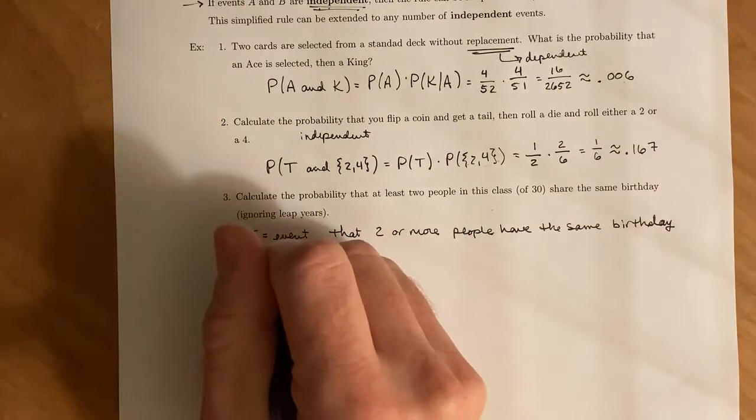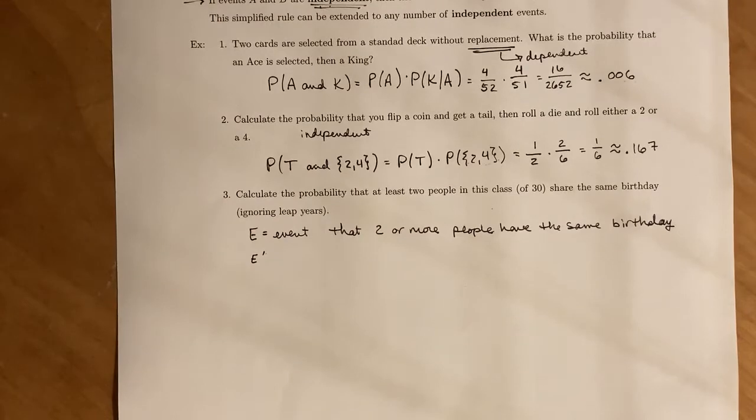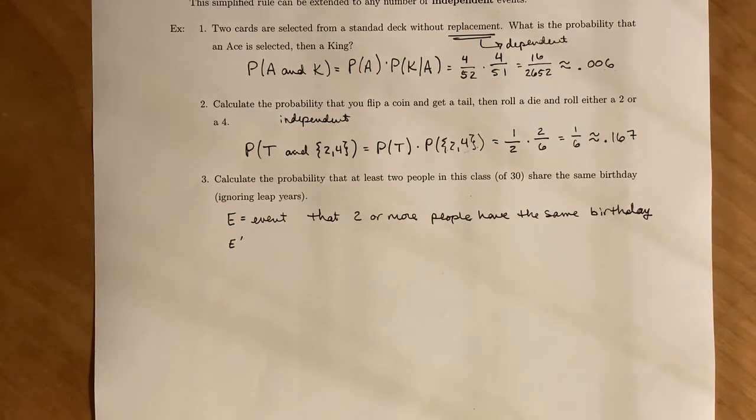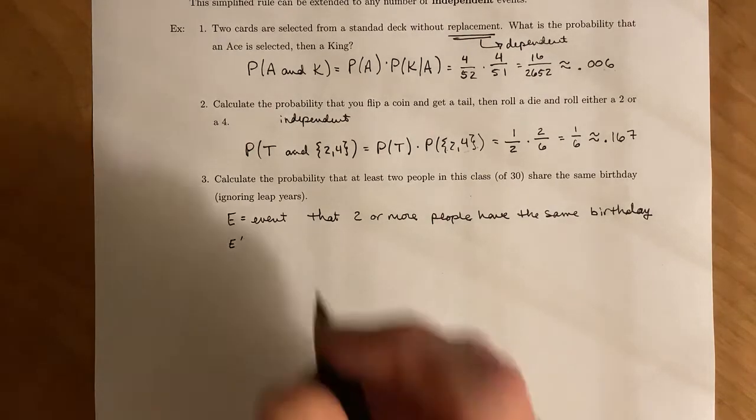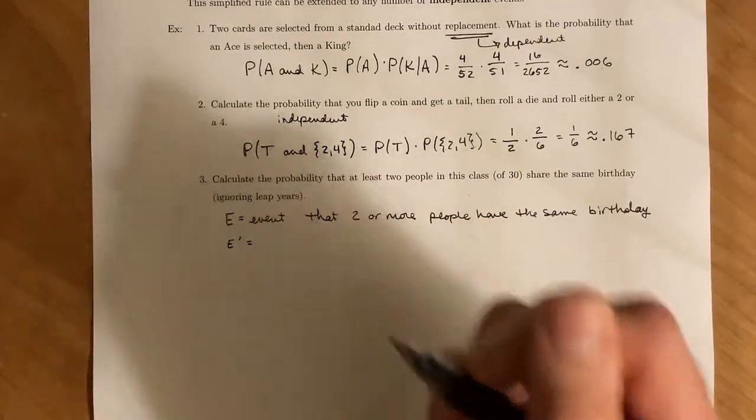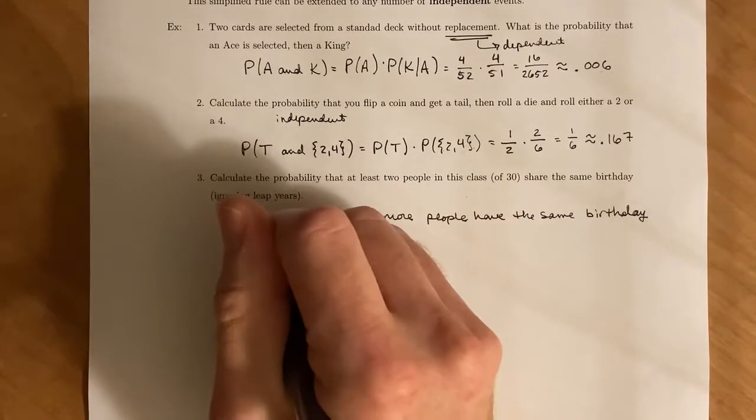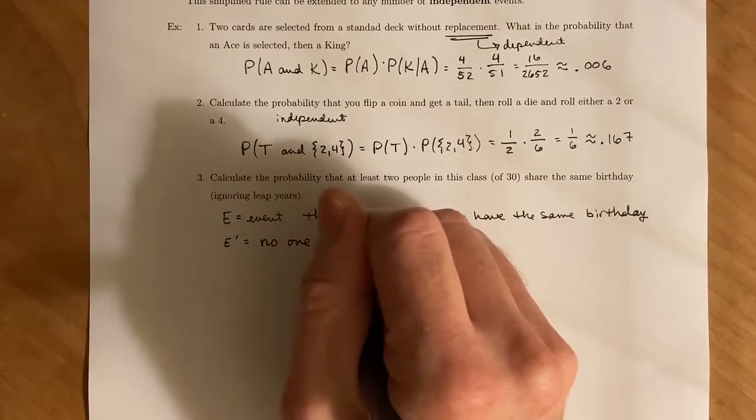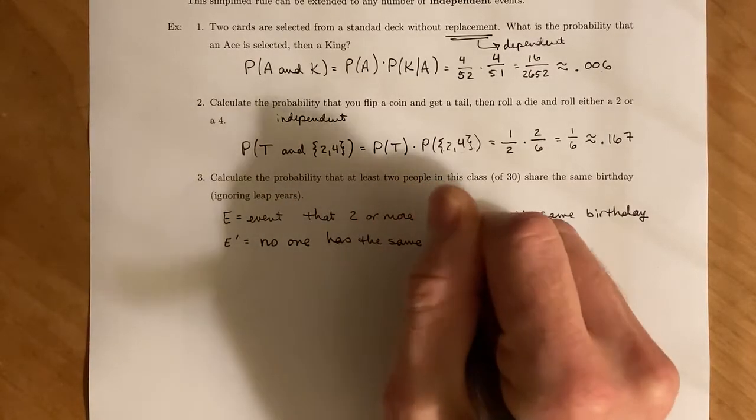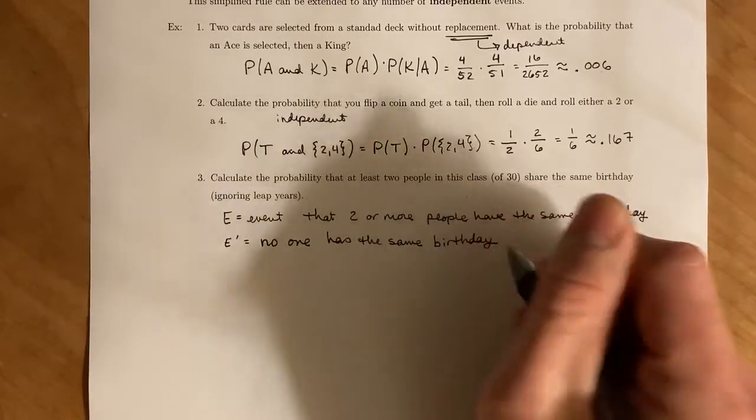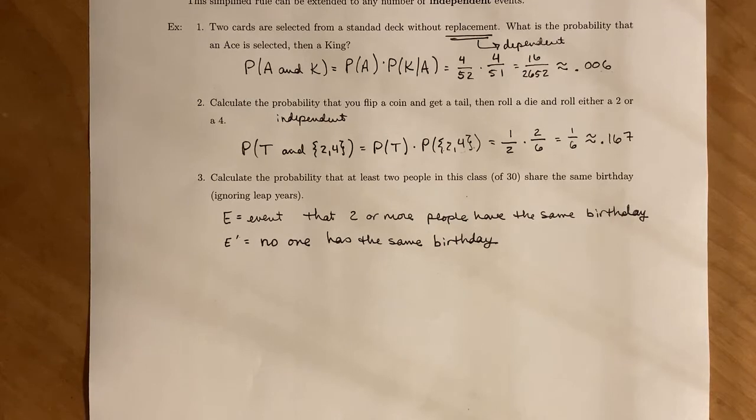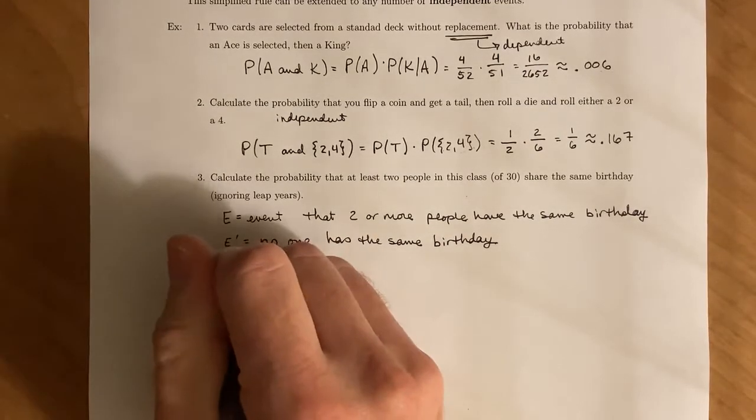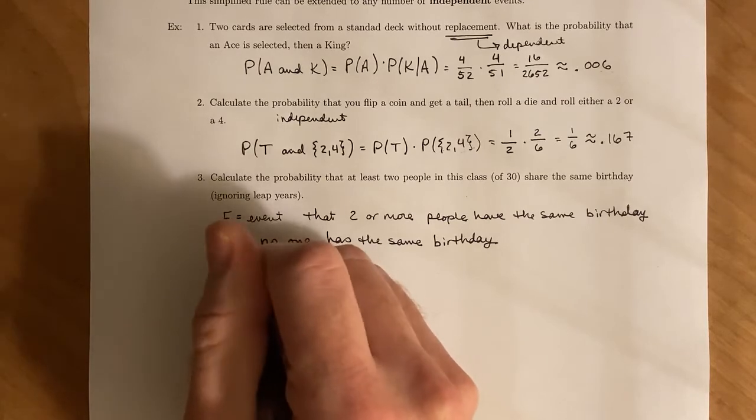And so think about what the complement of that's going to be. So if you look at all the possible events that are in E, well, you can have two people that have the same birthday, three people that have the same birthday, so on, which means that the only event that's not included is that everybody has distinct birthdays, which amounts to no one has the same birthday. Hopefully that makes sense.